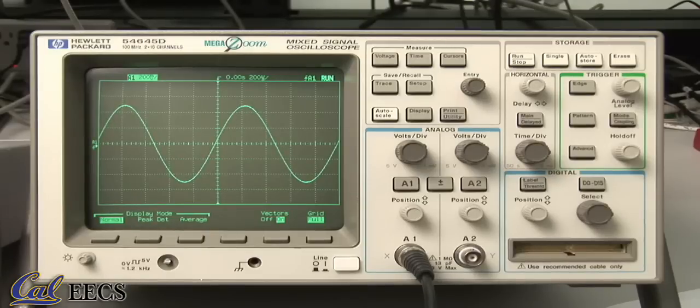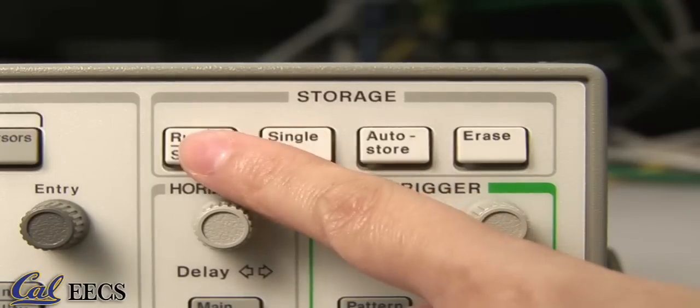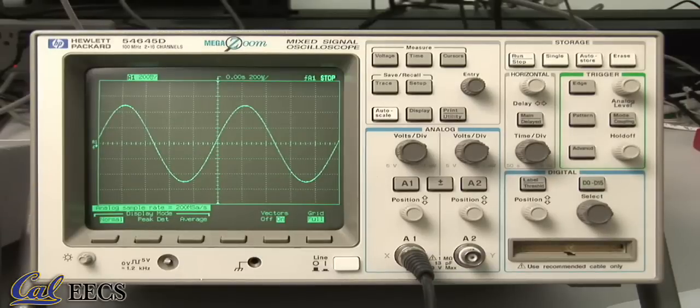Since your oscilloscope is digital, you have the option of storing waveforms in memory. The run stop button takes a snapshot of the current waveform if you press it once. Pressing it again takes the scope back to run mode.